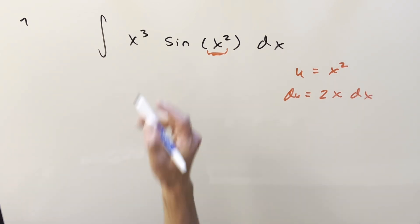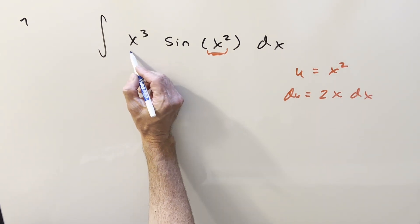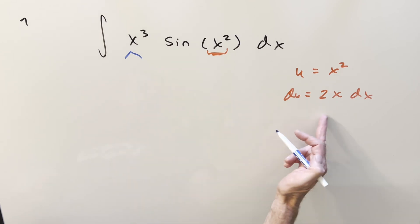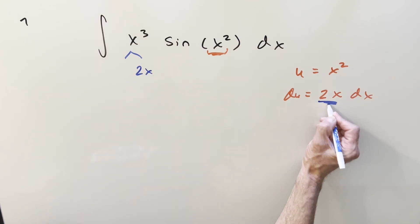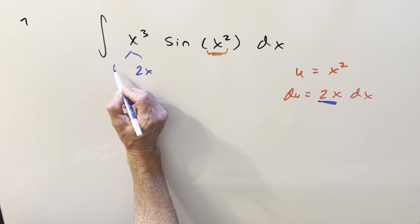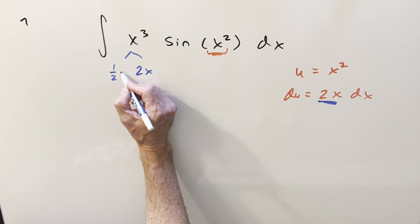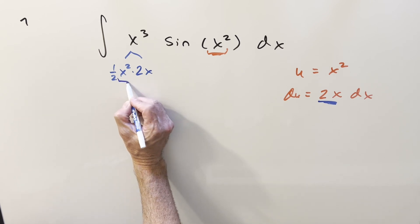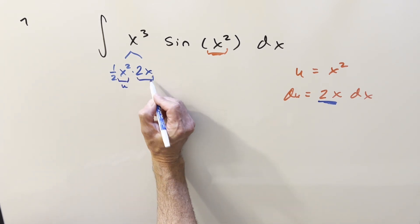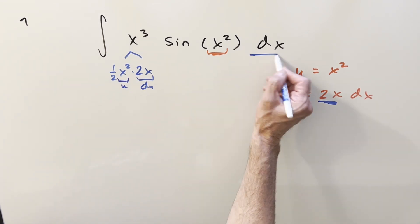Now before we actually substitute it, let's break up this x cubed in order to work with this. So I'm going to create this 2x that we have right there, and then so I'm not changing it, we'll also create half x squared. So what we have right here, we're going to have u right there, and this is going to be our du when we team up with dx.